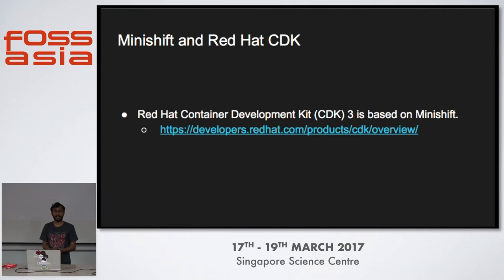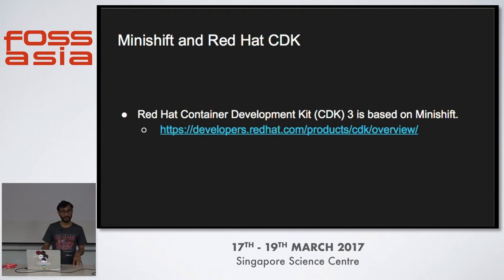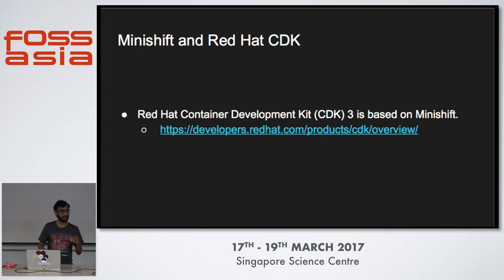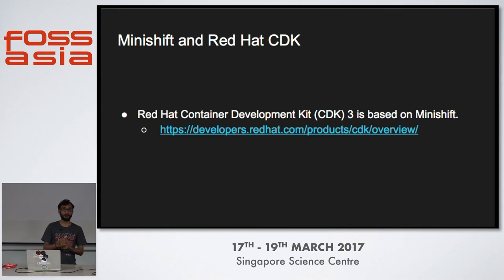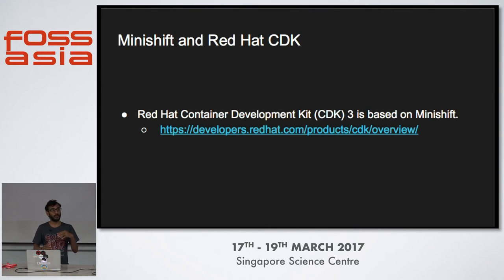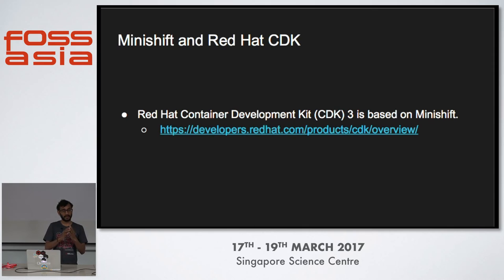Why is Red Hat actually investing in Minishift? Because inside Red Hat we have a product called CDK - Container Development Kit. It's a zero-price subscription-based thing where you have the RHEL ISO, you can run your containerized stuff on RHEL, and OpenShift with OCP - which is the OpenShift Container Platform - the downstream OpenShift will be there.